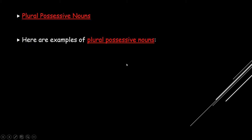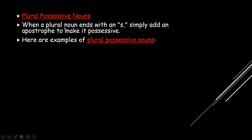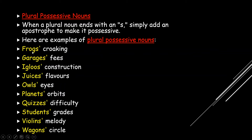Next is plural possessive nouns. When a plural noun ends with an 's', simply add an apostrophe to make it possessive. For example, 'frogs' croaking' — 'frogs' is a plural noun, and by adding an apostrophe it represents the frogs as a whole. So whose croaking? Frogs' croaking.